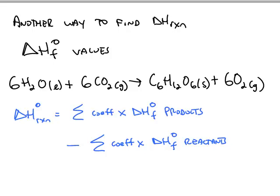Another way to find delta H for reaction rather than Hess's law is to use enthalpy of formation values. Here's a typical chemical reaction. This is the photosynthesis reaction where water reacts with carbon dioxide to form glucose and oxygen.